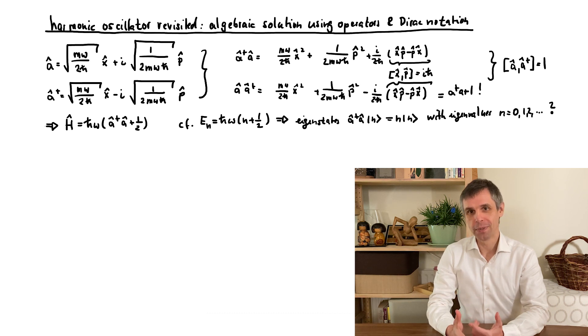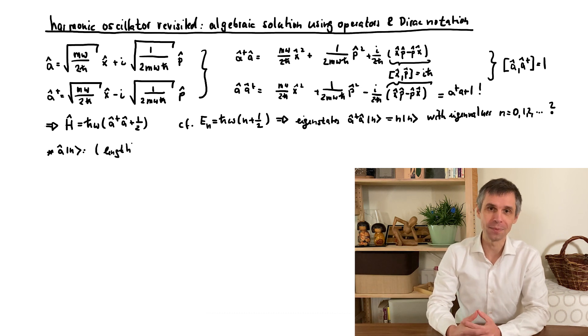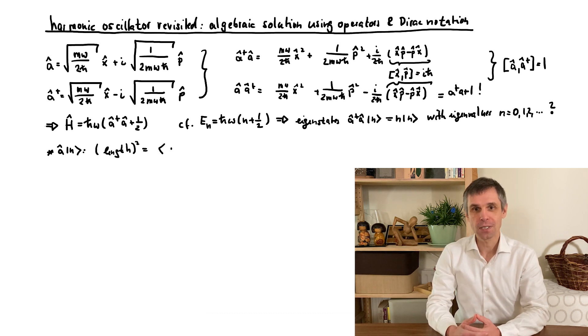So now the real magic happens when we apply these operators A and A-dagger to a known eigenstate, which we assume to be normalized. First, let us work out the squared length of the new state, for which we use the scalar product.